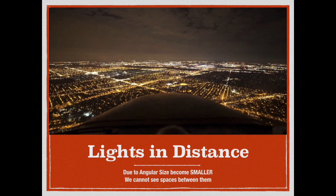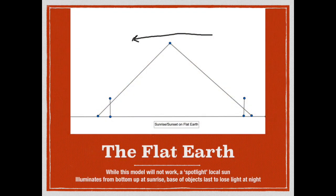Let's have a look at how a sunrise and sunset on the Flat Earth would look. The Sun is small and local, moving in the direction of that arrow. It provides a cone of light, and as you see from that upright object on the left, that cone of light will intersect the bottom of the object first and then work its way up until eventually it illuminates the top. Likewise on the right, as the Sun moves away and night descends, the darkness will start at the top and work its way down to the bottom, with the base of the object illuminated last.